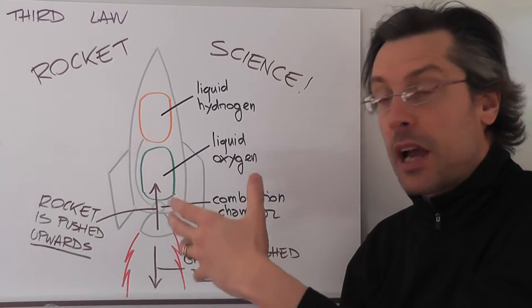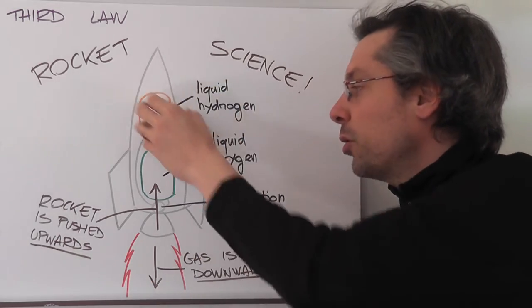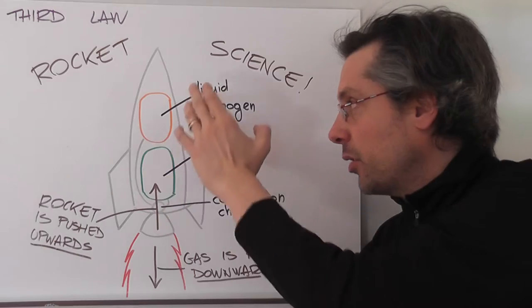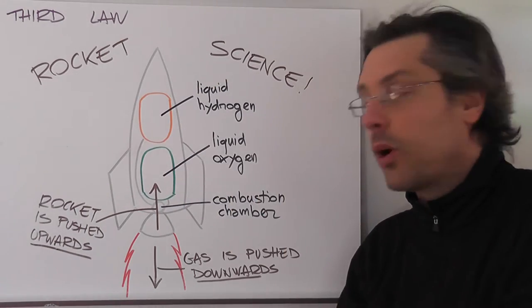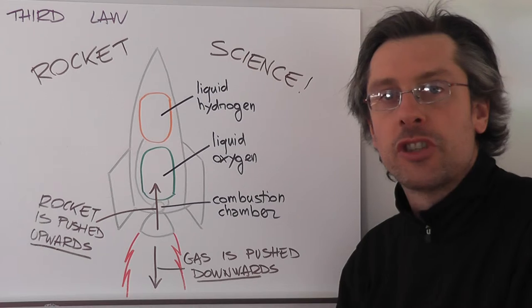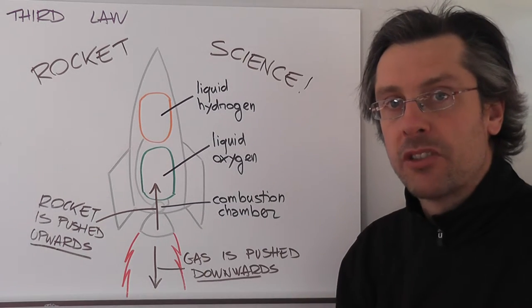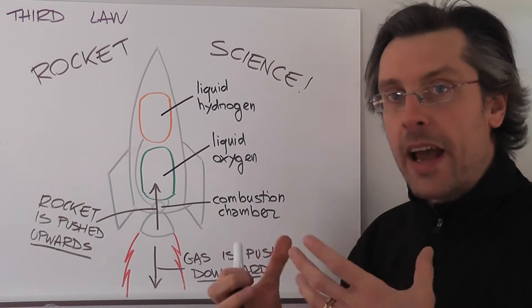So let's imagine a rocket. Some types of rockets were fueled by two types of fuel that got mixed together. You have liquid hydrogen in tank number one, and you have liquid oxygen in tank number two, and you mix them in a combustion chamber.